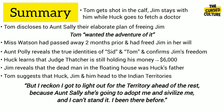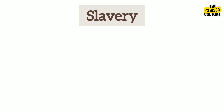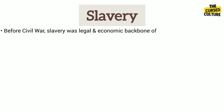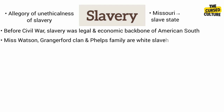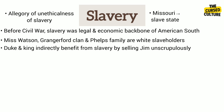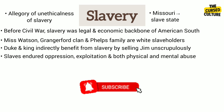Slavery is a glaring theme in The Adventures of Huckleberry Finn, set before the Civil War when slavery was legal and served as the economic backbone of the American South. The story takes place in Missouri during the 1830s or 1840s, a period when Missouri was a slave state. Mark Twain strongly opposed slavery, and the novel functions as an allegory of the unethicalness of slavery. Characters such as Miss Watson, the Grangerford clan, and the Phelps family are depicted as white slaveholders.